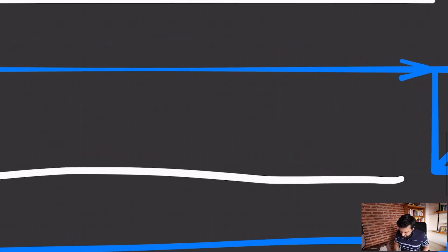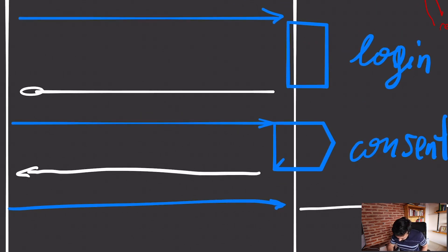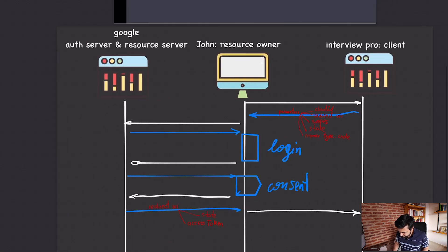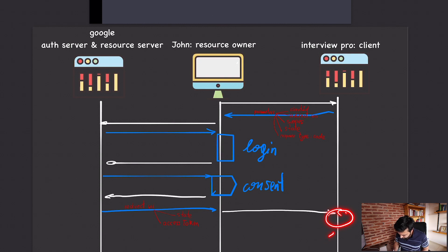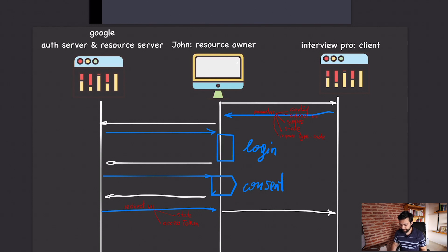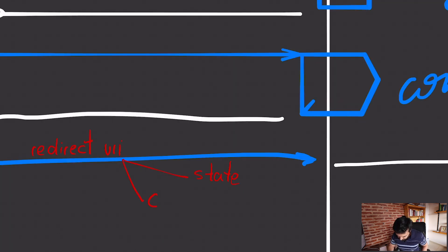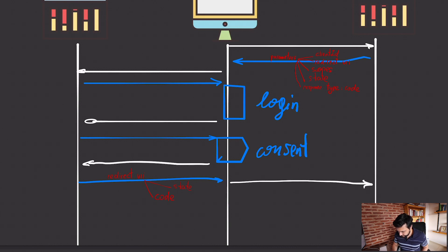So what does Google send back after the user has consented? Google redirects him back to the redirect URI we specified, and that URI receives some parameters: the state — and you might expect the access token. But you'd be wrong. That's how it works in the implicit flow. Instead, when response_type is 'code,' what you receive is a code. This code comes back to you and you forward it to your API.